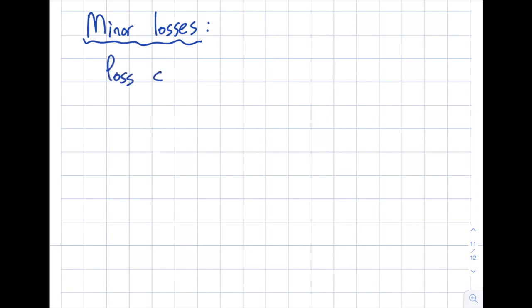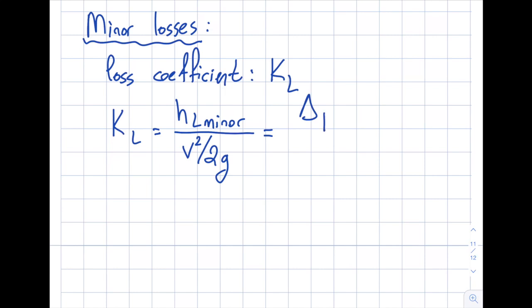The first thing is there's always a loss coefficient associated with flow components, and that will be denoted as K sub L. And the way that we define K sub L will be h_L minor divided by v squared over 2g, which will also be equal to delta P over 1 half rho v squared.